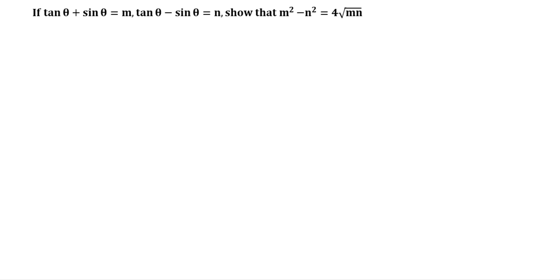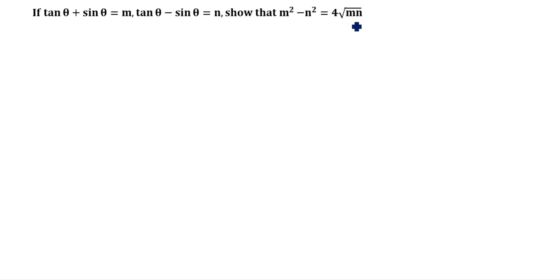Hi friends, welcome to my channel 'Excellent Ideas in Education.' Today we are going to solve this trigonometry problem. If tan θ + sin θ = m and tan θ - sin θ = n, show that m² - n² = 4√(mn).